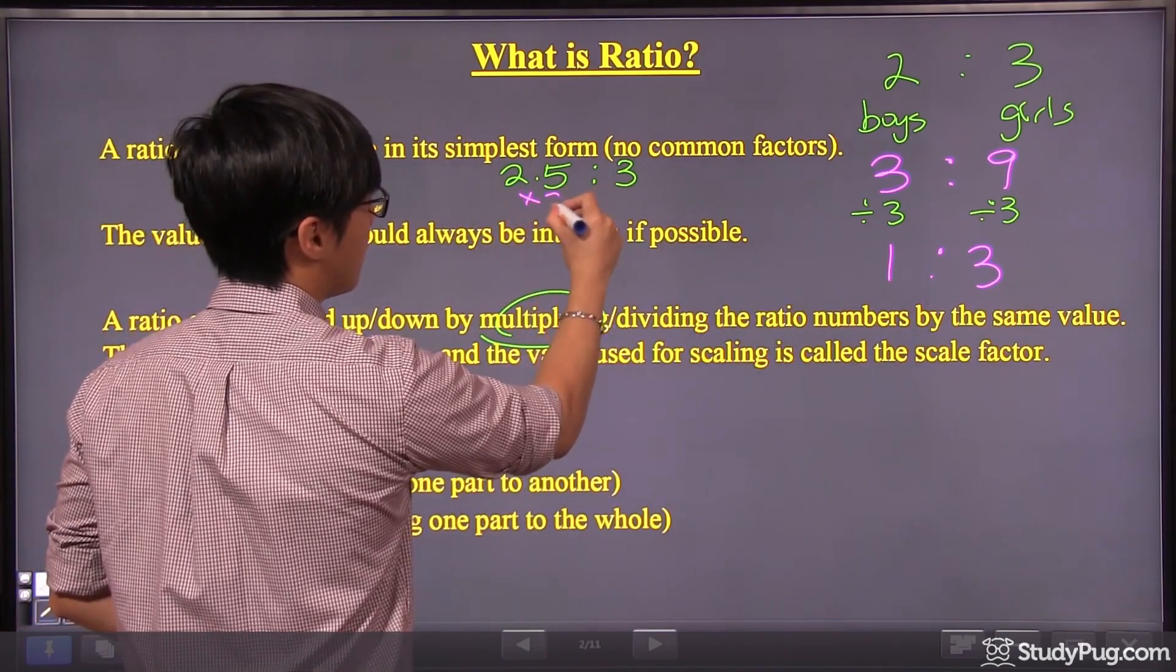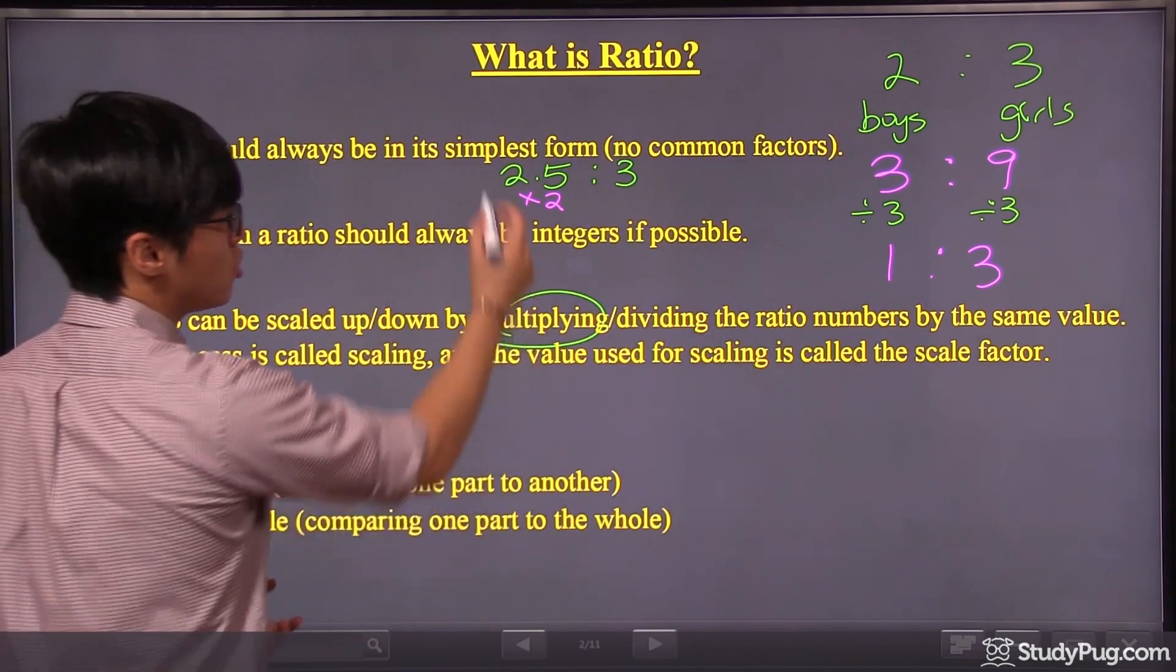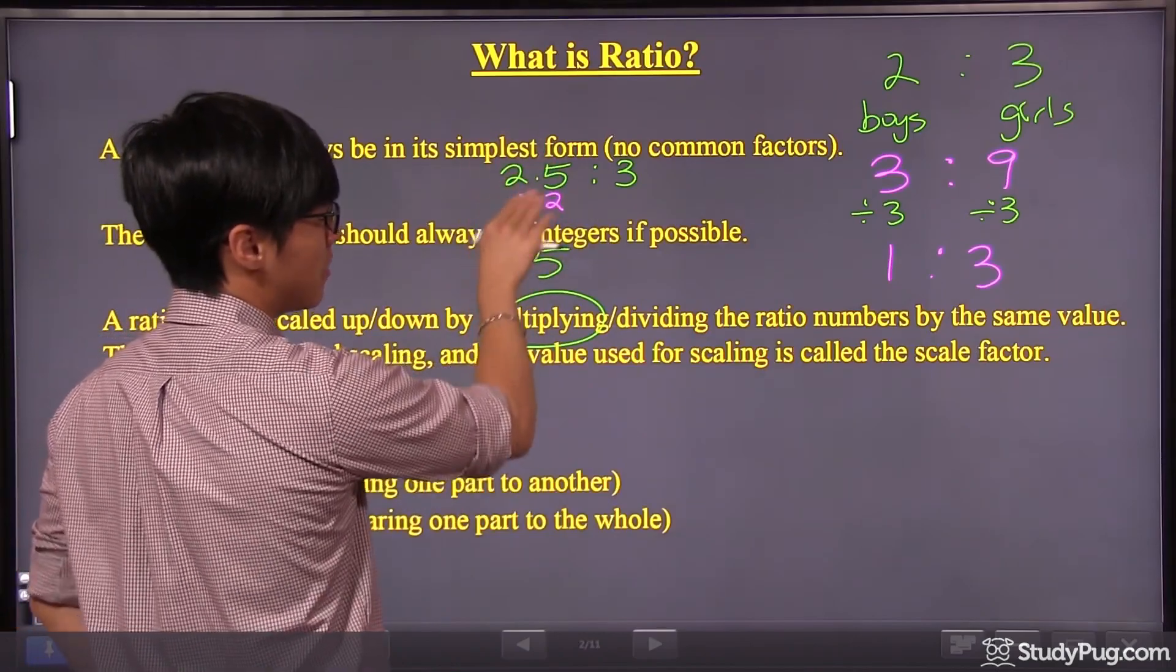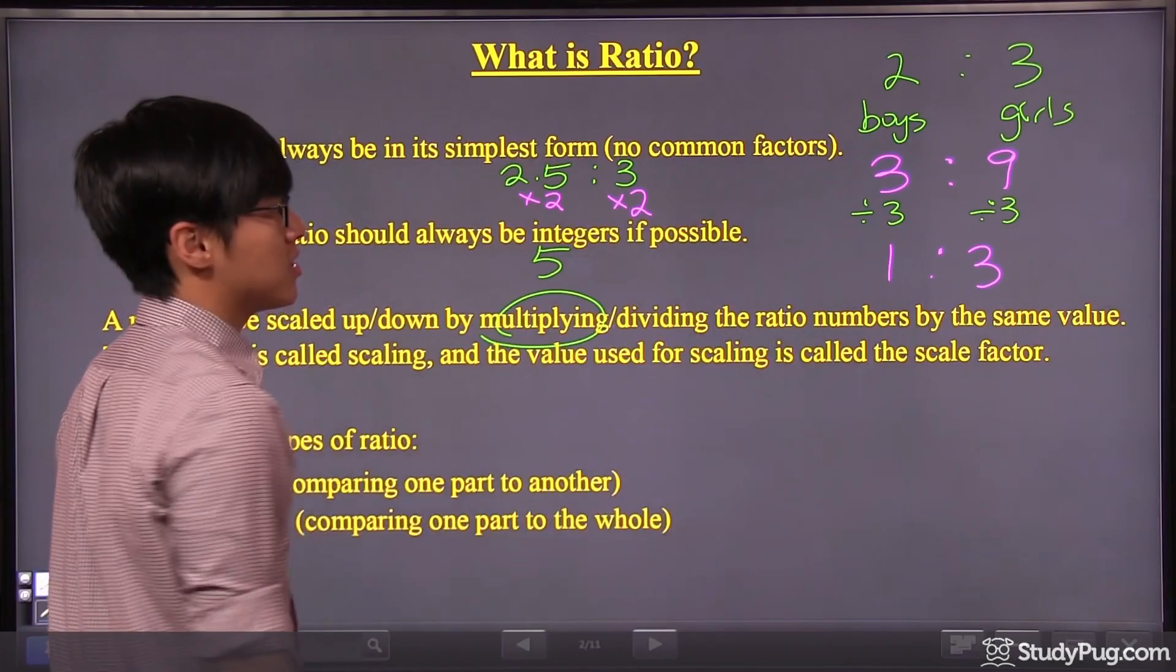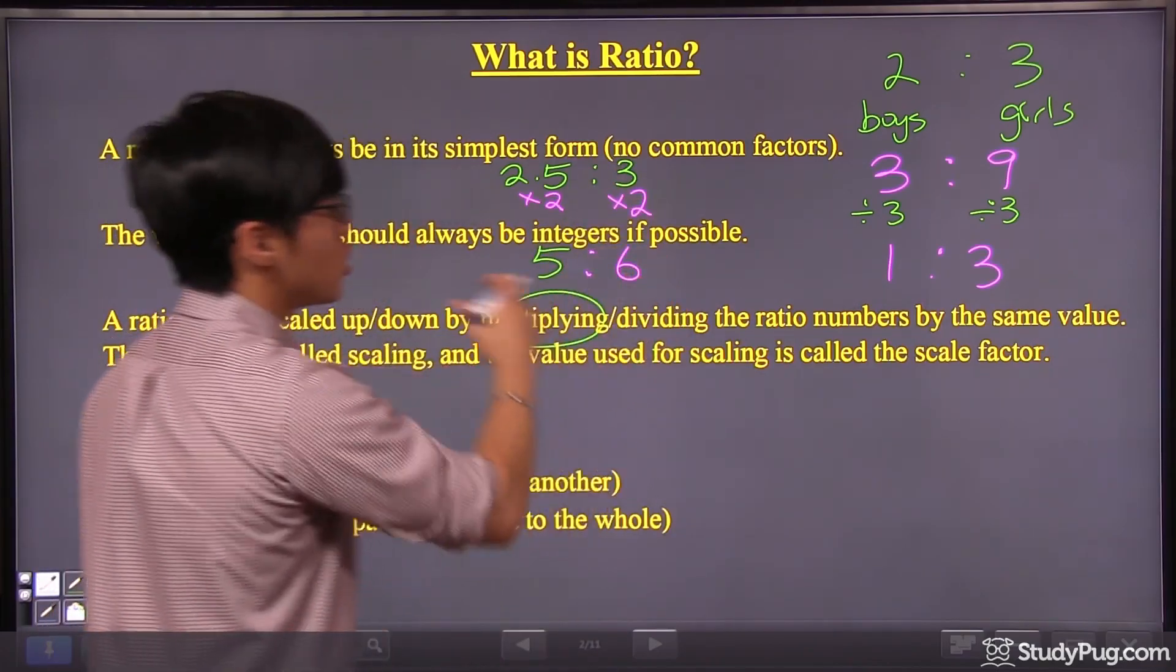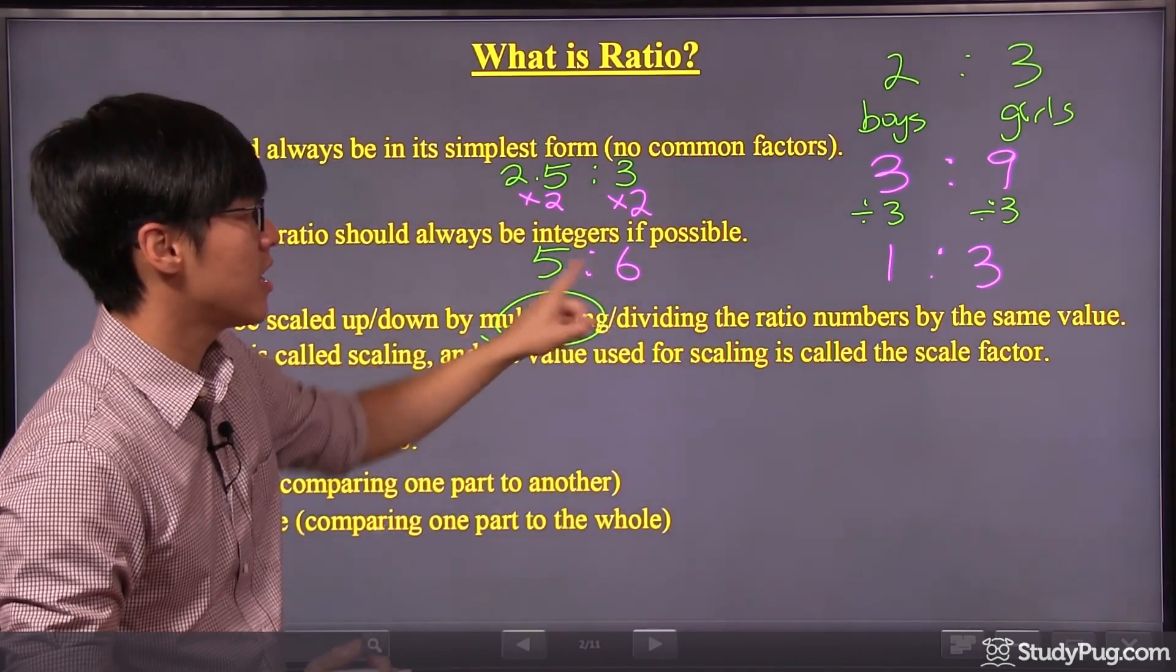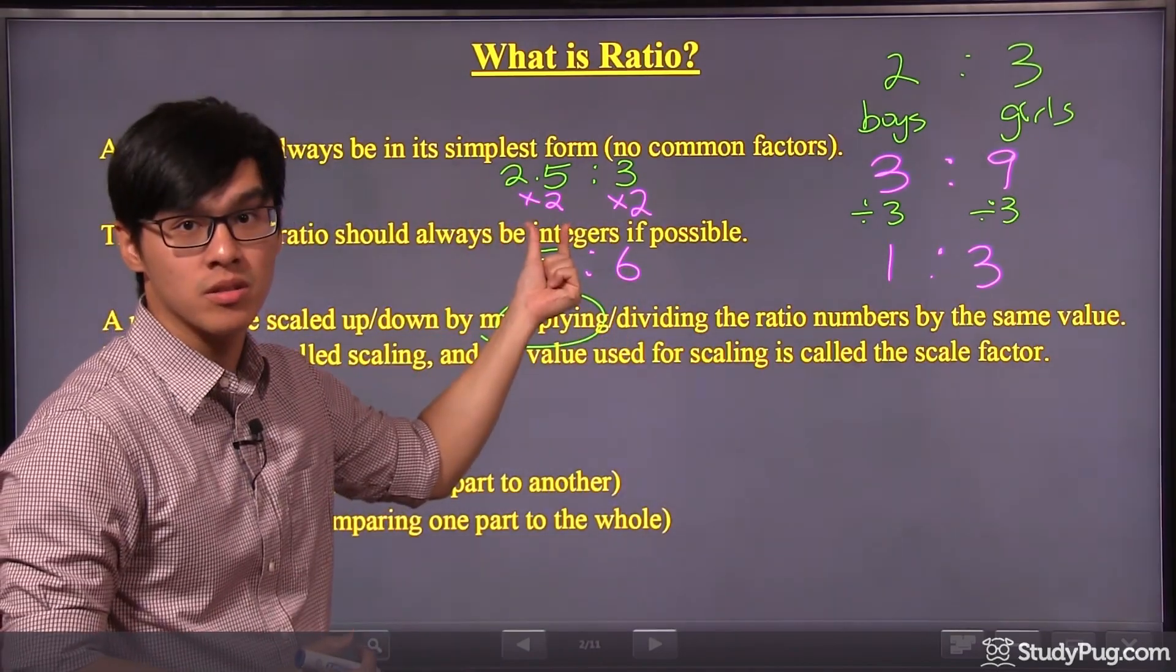And since we're multiplying 2 on the left side of the ratio, we multiply the same number, which is 2, on the right side as well. So 3 times 2 gives us 6. So our overall ratio originally was 2.5 to 3, now can be converted into 5 to 6. And now you see, 5 and 6, they are both integers.